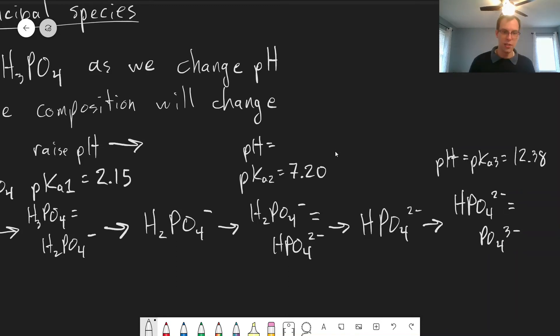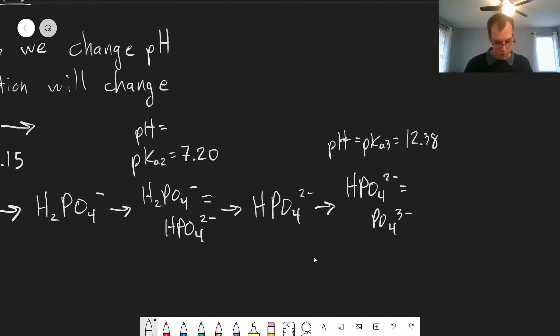So at high enough pH, we've now converted, and once we go past that point as the pH keeps increasing, we will have primarily phosphate. There will also be some hydrogen phosphate present as well in equilibrium with the phosphate.